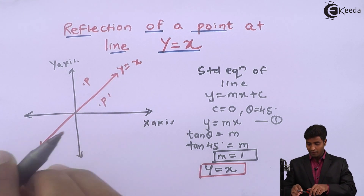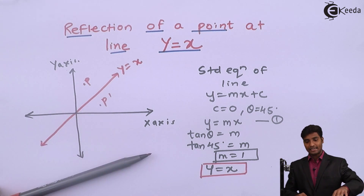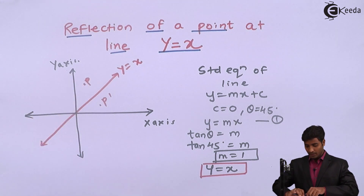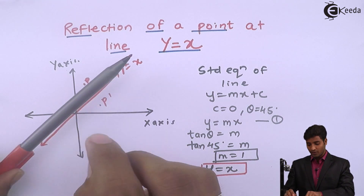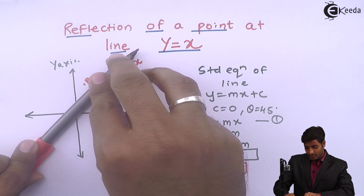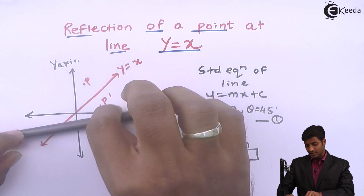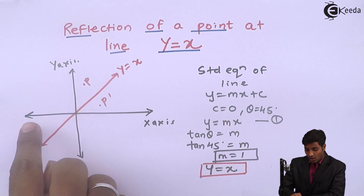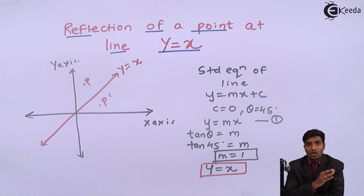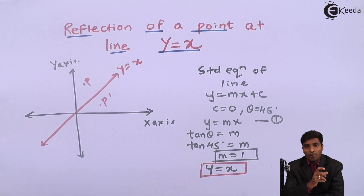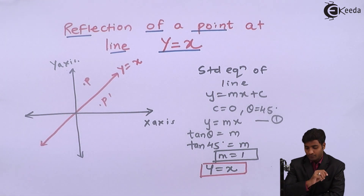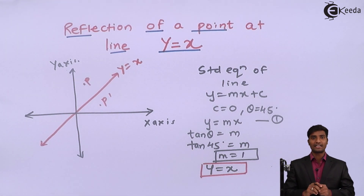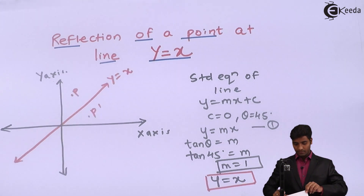First, for performing the series of transformations and reflecting this point about this line, I have to perform the following transformations. First, I will do rotation. Rotation means I have to bring the line y is equal to x onto the x-axis — that is, I have to coincide line y is equal to x with the x-axis — because we have the direct resultant matrices for reflection of a point about the x-axis.